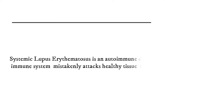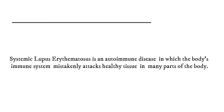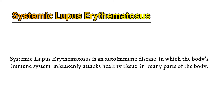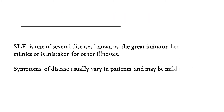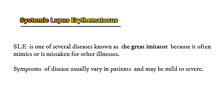Hi, my name is Dr. Vakas. Today we'll discuss systemic lupus erythematosus. Systemic lupus erythematosus is an autoimmune disease in which the body's immune system mistakenly attacks healthy tissue in many parts of the body. SLE is one of several diseases known as the great imitator because it often mimics or is mistaken for other illnesses.